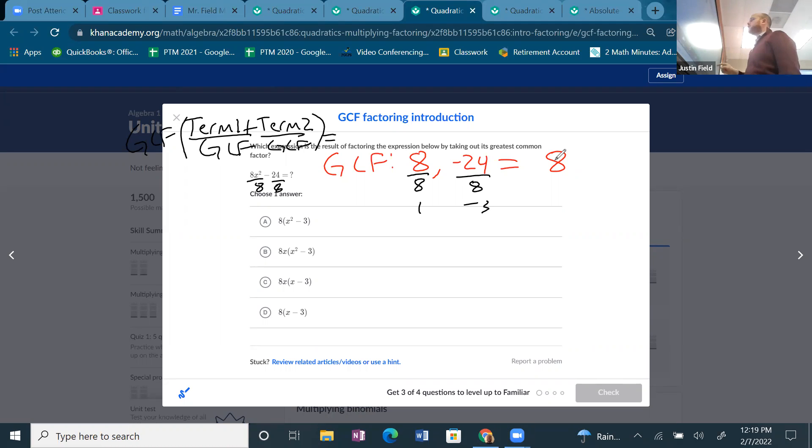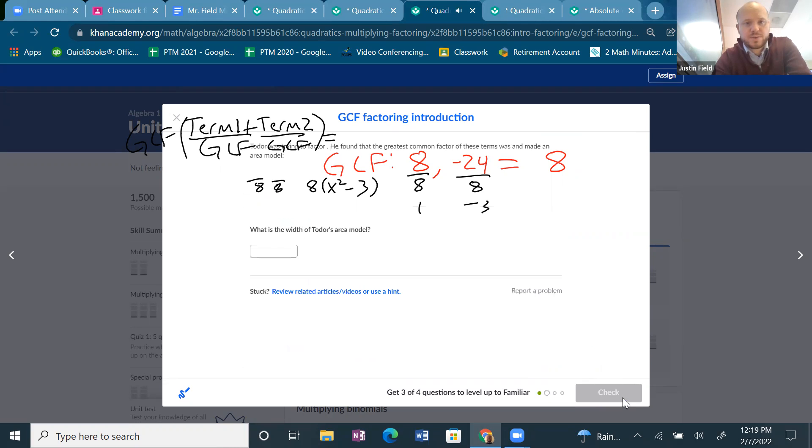So we're going to divide both of these things by 8 because they can both be divided by 8. And then we're going to write down with that 8. So 8x squared divided by 8 would just be x squared. 24 divided by 8 would be 3. The answer is 8 times x squared minus 3. All right, let's do one more.